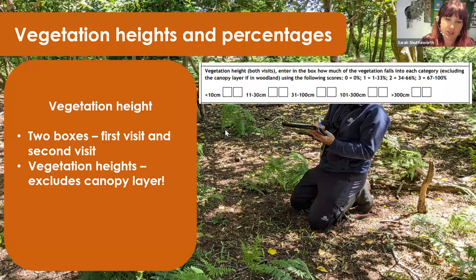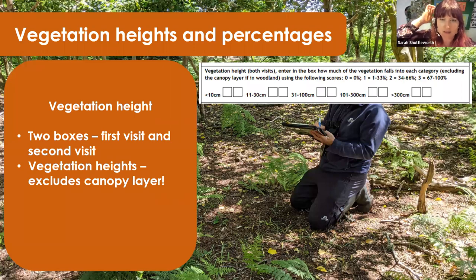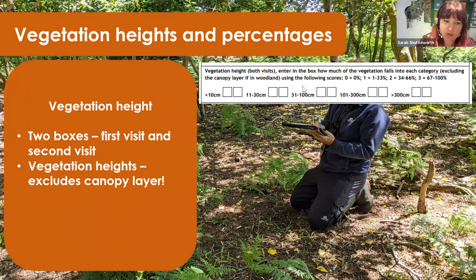Vegetation height and percentages can sometimes get a little confusing, so it's worth going over with woodland in mind. There are two boxes for vegetation height — one for your first visit, one for your second. The vegetation height excludes the canopy layer, so the 'above 300 centimeters' category is not asking for the percentage cover of the top canopy — it's more for your understory, things like hazel, hawthorn, and blackthorn.